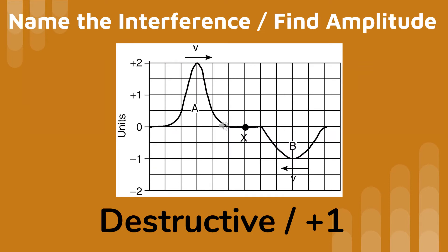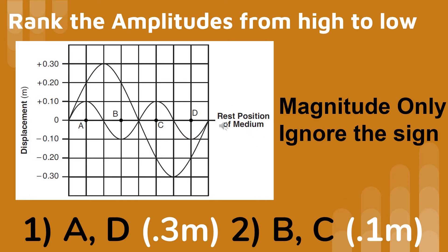Name this interference and find the amplitude when these two waves meet at point X. Rank the magnitudes at points A, B, C, and D from high to low. Make sure you ignore the negative signs.